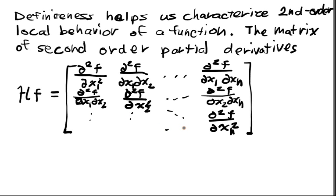These guys are going to be d squared f over d x_1 d x_n, and d squared f over d x_2 d x_n. And we call this guy the Hessian.